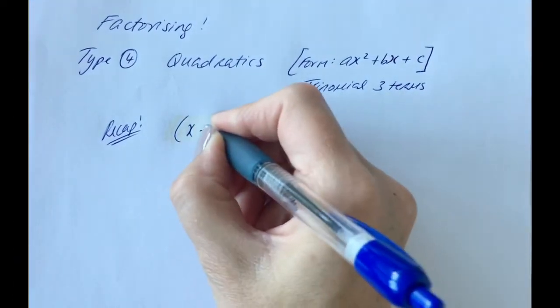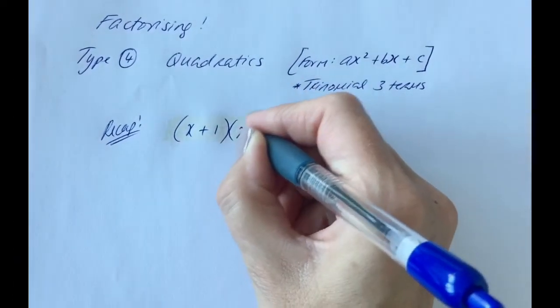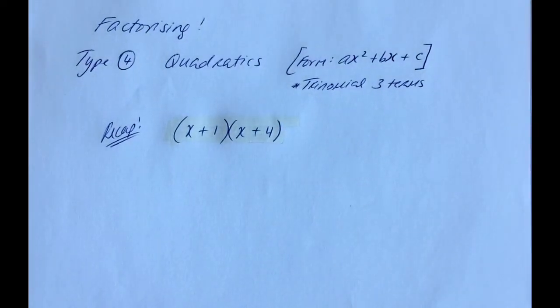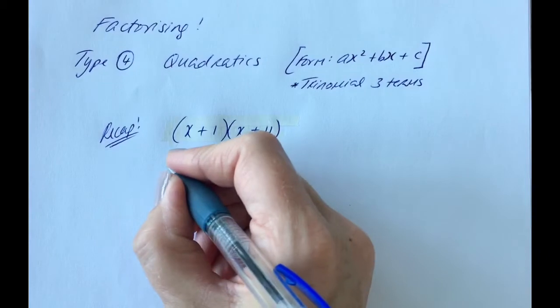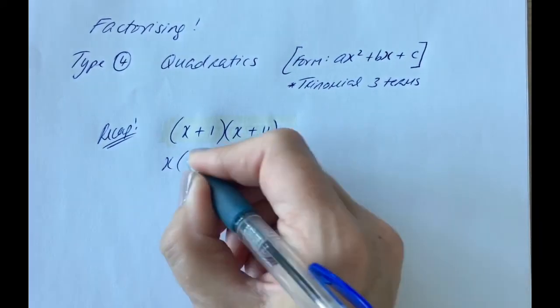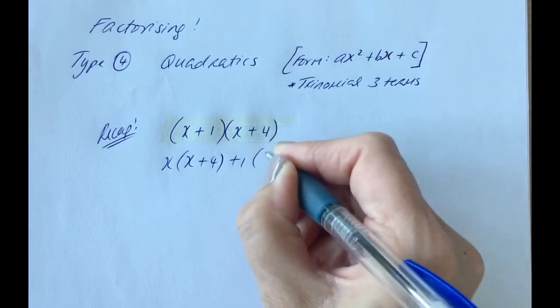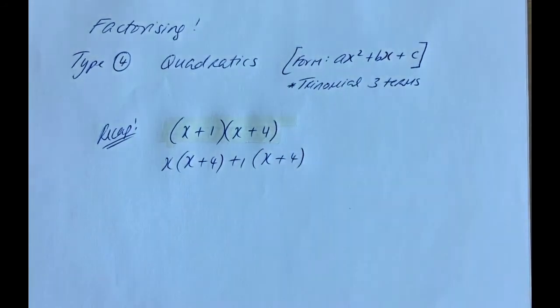So let's say we have x plus 1 in one bracket and x plus 4 in the other. If we were asked to multiply this out, these double brackets, we'd take the first term multiplied by the second bracket, x plus 4, take the second term plus 1 multiplied by the second bracket, x plus 4.